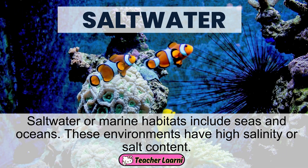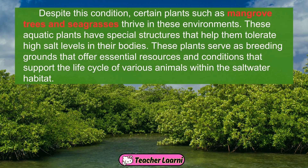Saltwater or marine habitats include seas and oceans. These environments have high salinity or salt content. Despite this condition, certain plants such as mangrove trees and seagrasses thrive in these environments. These aquatic plants have special structures that help them tolerate high salt levels in their bodies. These plants also serve as breeding grounds that offer essential resources and conditions that support the life cycle of various animals within the saltwater habitat.